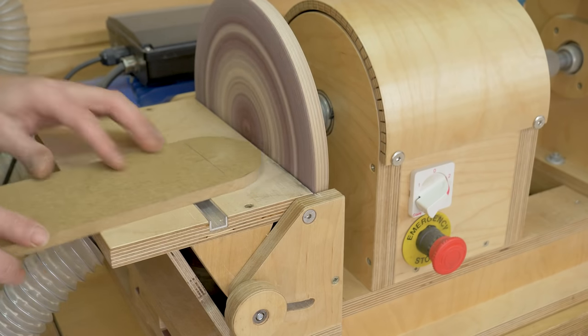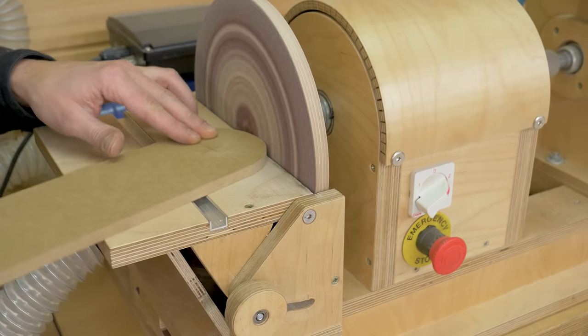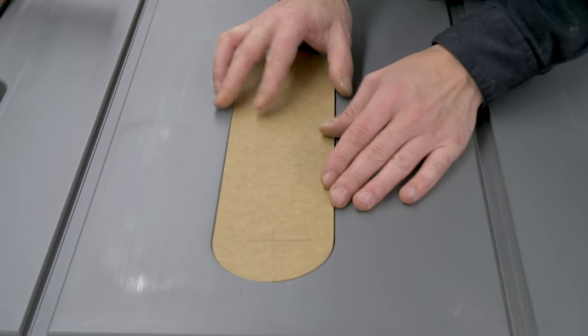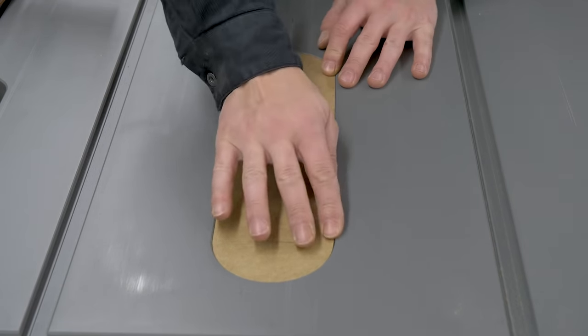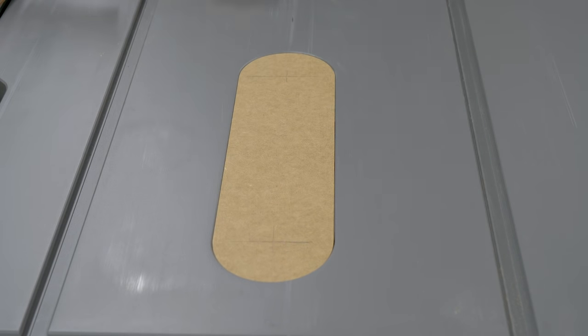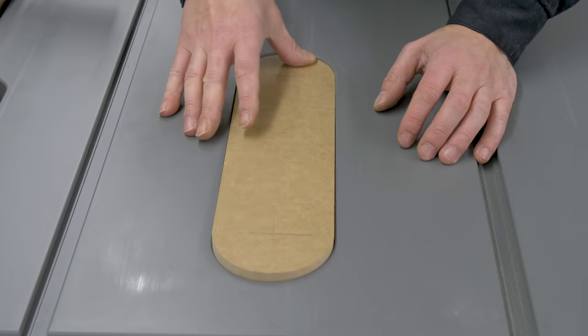I'll smooth down the piece with the sanding disc. I make sure the jig is correct by inserting it in the gap in the table saw's bench top. If it doesn't fit, we can correct it by using the sanding disc once more.